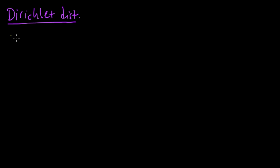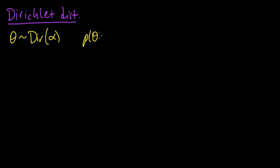We say that theta is distributed according to a Dirichlet — written as Dir — with parameter alpha. The density function, which I'll use a lowercase p for, of theta is equal to 1 over a generalized beta function of alpha, times the product as i goes from 1 to m.